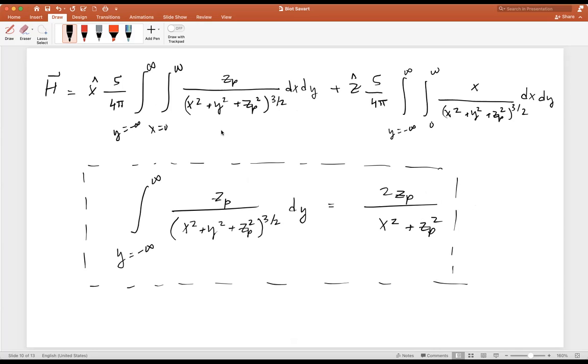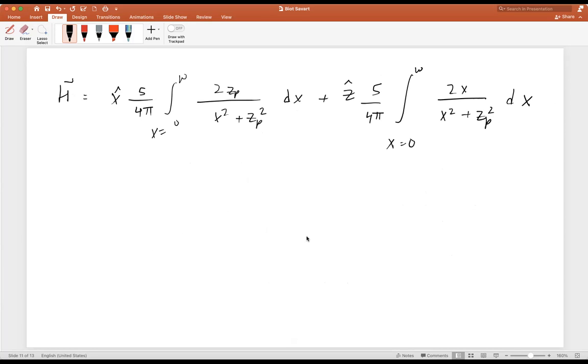We can take both of these expressions, and both of them have this integral from y minus infinity to infinity with similar constants. This allows us to simplify this down into one integral. Each of these are integrating over dx. The difference is in the x direction, we do not have any x terms in the numerator. But in the z direction, we do have this x term in the numerator. So they are going to have slightly different integration expressions.